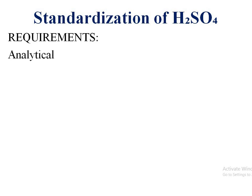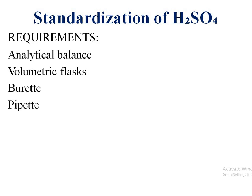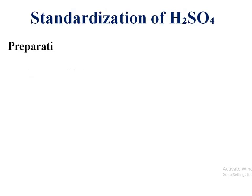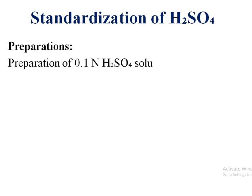Requirements: analytical balance, volumetric flask, burette, pipette, measuring cylinder, conical flask, beakers, and indicator phenolphthalein are required to standardize H₂SO₄. Preparation of 0.1 normal H₂SO₄ is required.